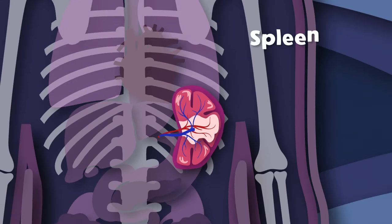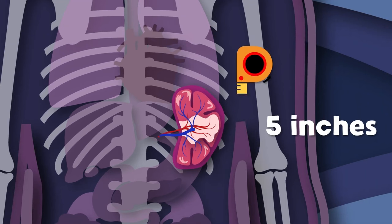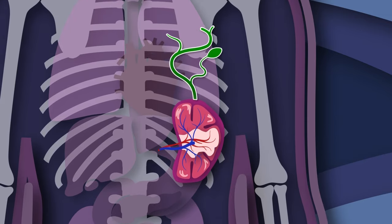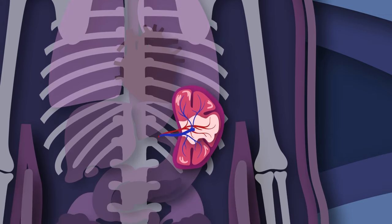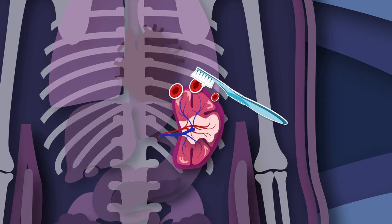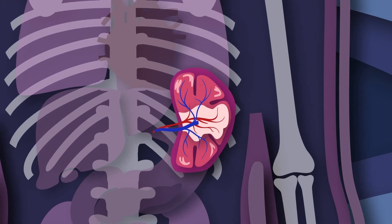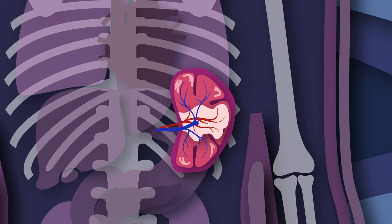I am your spleen. You will learn what this means. I am purple, five inches long, and I'm shaped like a bean. I'm your spleen. You will learn what this means. I produce antibodies and I keep your blood clean. All the functions of your spleen are really complex, but I'll explain the basic functions in the next few steps.